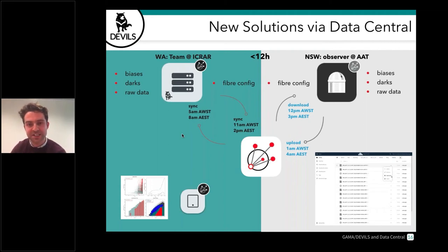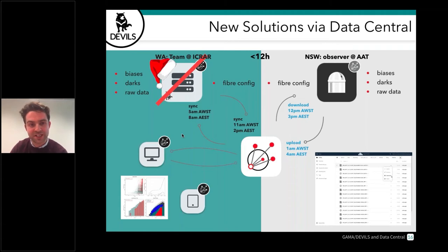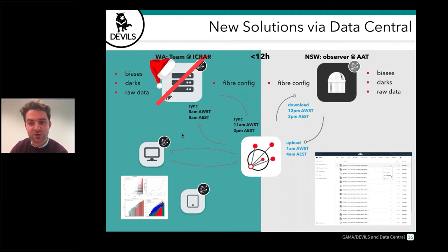It also provides resilience when things break locally. On Christmas Day our server machine went down, but I realized I could just download all the data I needed from Data Central, run the pipeline, and upload it back — solving what would have been a massive problem in terms of losing a night's observing over Christmas. The functionality provided by Data Central in actually running the survey has basically saved us from that.